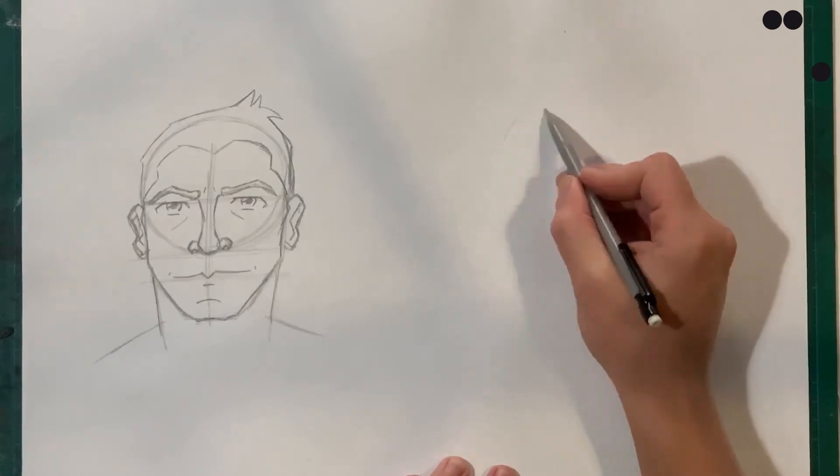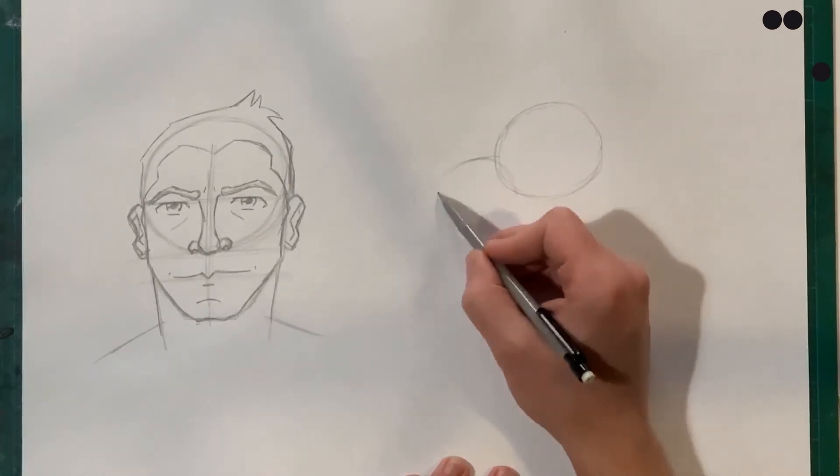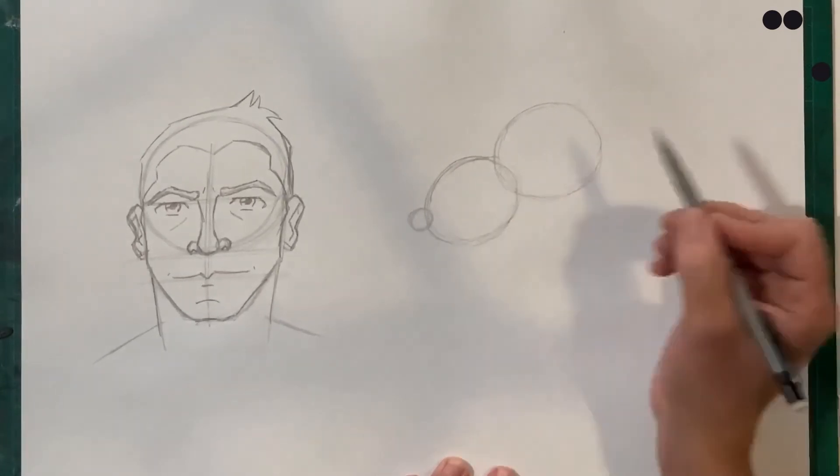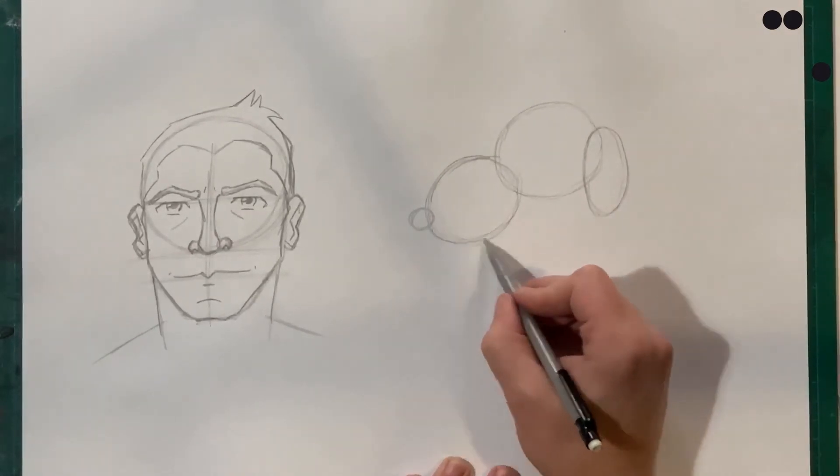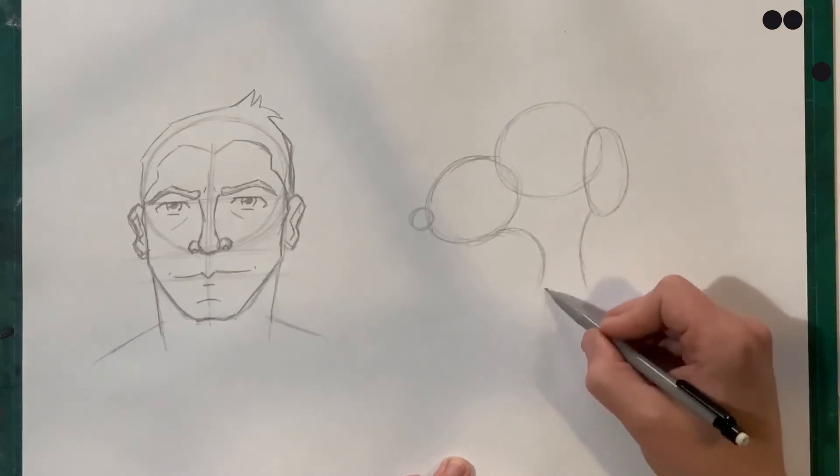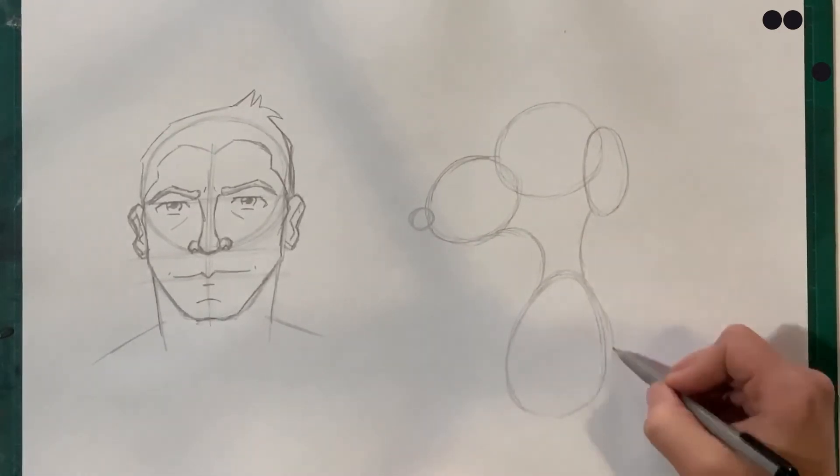So as we continue on in the video I just wanted to emphasize the use of shapes as we draw the character Snoopy. Using shapes to help build a character is a great way of understanding not only how to draw that one particular character but can be applied to your own characters or various other characters that you wish to draw.